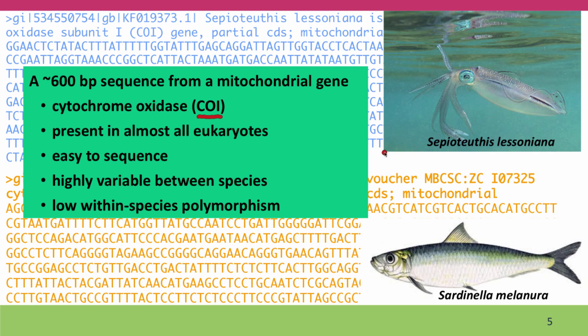In the background are DNA barcode sequences from two different species: Cephioteuthis lesumiana, a small squid, and Sardinia melanura, a small fish. Both are species where there may be cryptic species — species that are genetically distinct but physically look very similar. DNA barcoding allows researchers to determine how many species there really are.